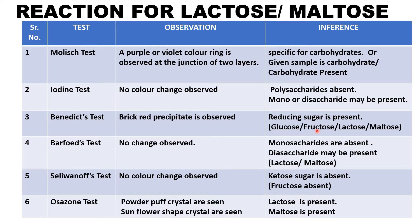From Benedict's test we get to know the given sample is reducing in nature, whether it's a monosaccharide or disaccharide. Then I will perform Barfoed's test — no change is observed, as the given sample is a disaccharide. So monosaccharide is absent and disaccharide may be present.